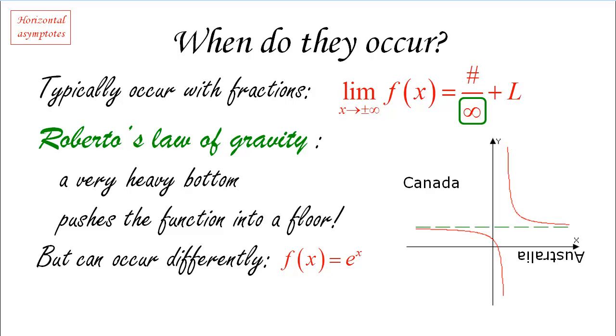As the exponent goes closer and closer to negative infinity or if you want further and further away from zero on the left hand side, e to the x becomes smaller and smaller and becomes, in fact, closer and closer to zero. So while a fraction may be a typical symptom that might suggest the existence of a horizontal asymptote, they don't have to be there in order for the asymptote to exist, nor does a fraction necessarily imply a horizontal asymptote.